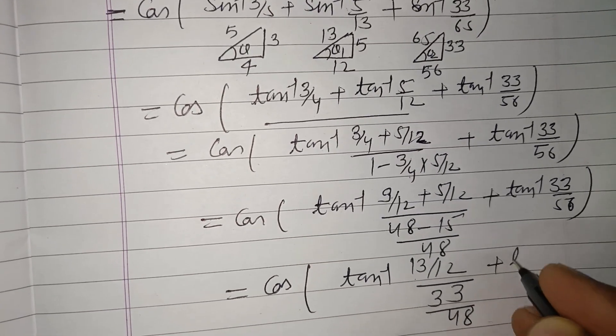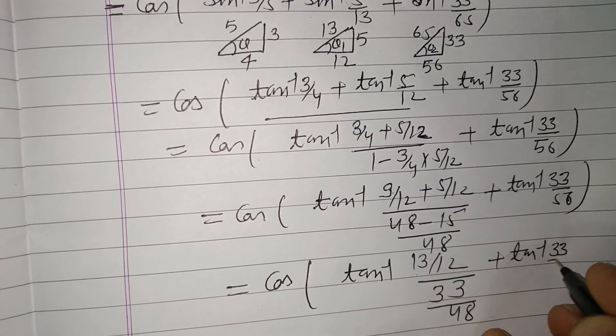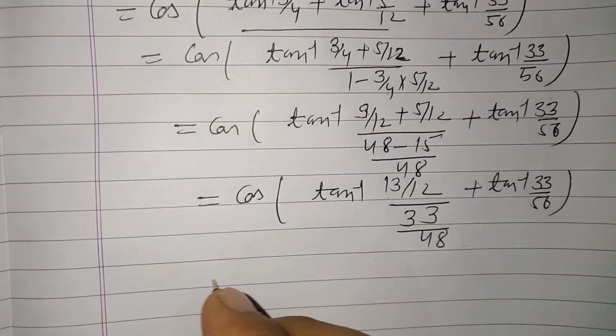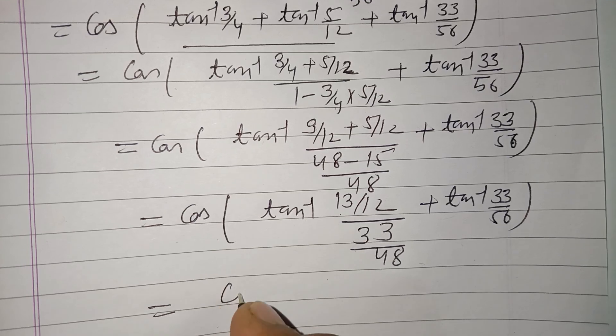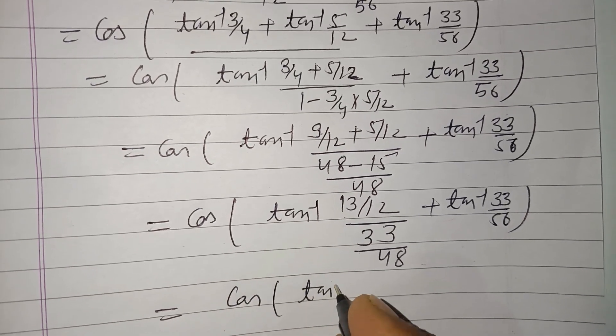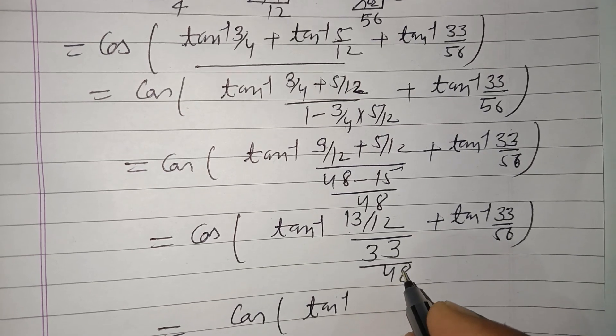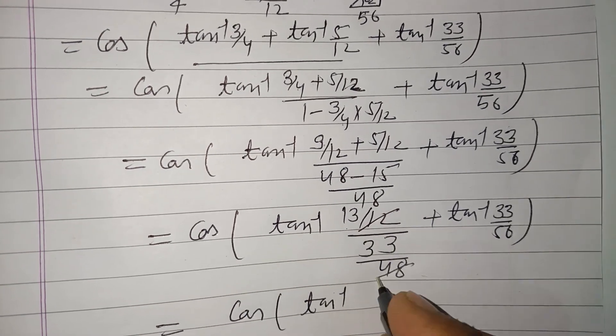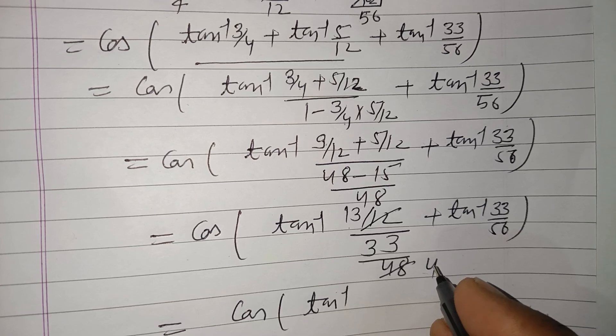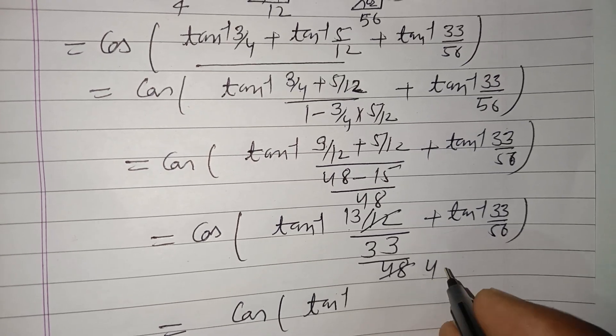Equal to cos(tan⁻¹(56/33)) - this becomes 56 for the 48, and for the numerator 48 upon 33 plus tan⁻¹(33/56).